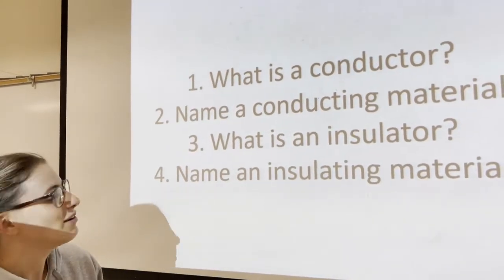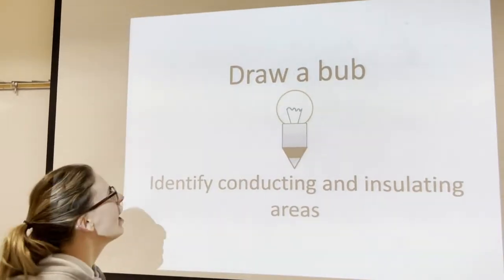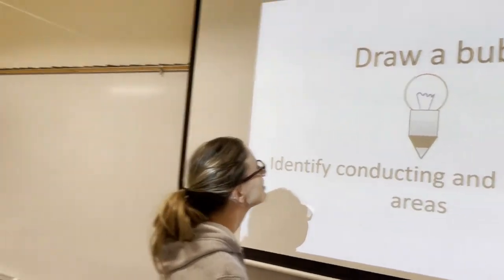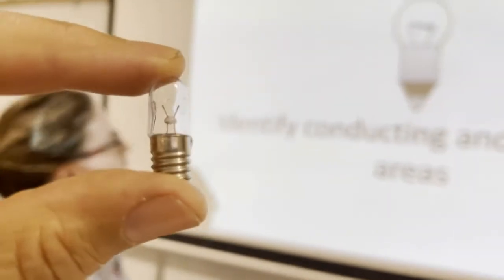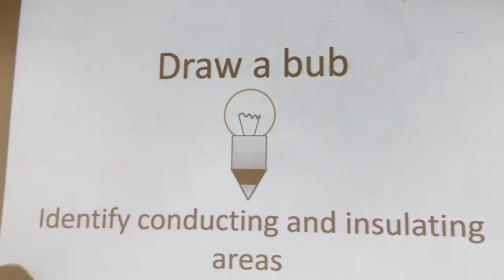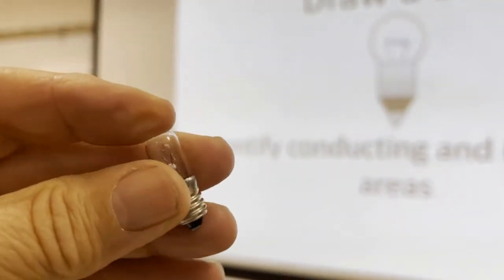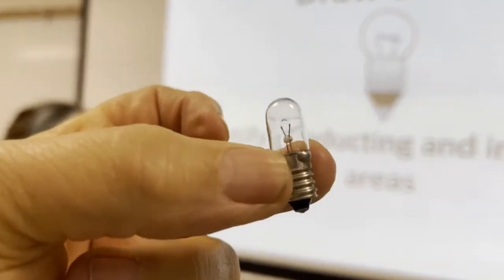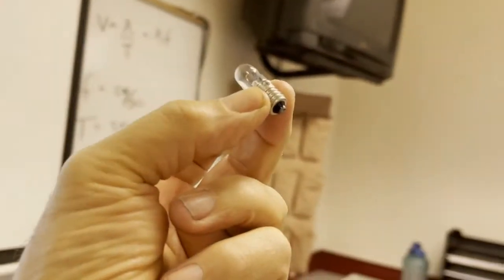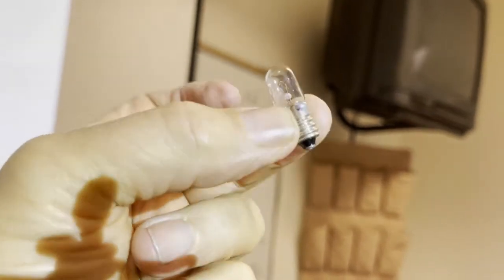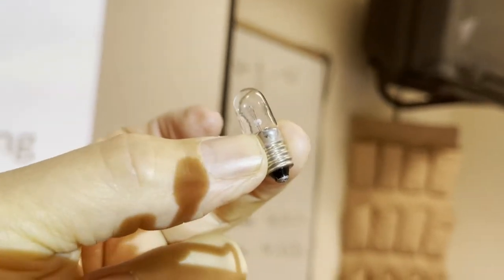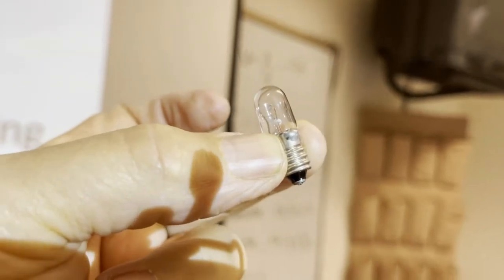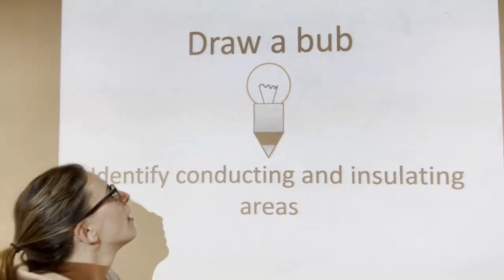Go ahead and draw a bulb. Let me grab one over here to identify conducting and insulating areas. Here's a light bulb. If you were here in class, we would give you one of these to hold in your hands. There are different parts to this — what parts are conducting and what parts are insulators? Draw a circle, a rectangle, a triangle.